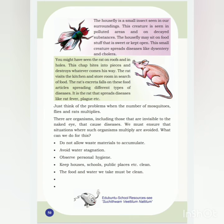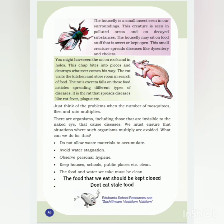What can we do? Do not allow waste materials to accumulate. Avoid water stagnation. Observe personal hygiene — that means take a bath daily, brush your teeth, wash your hands, etc. Keep houses, schools, and public places clean. The food and water we take must be clean. Keep food covered and don't eat stale food. These are some precautions we can take to avoid the multiplication of such organisms.